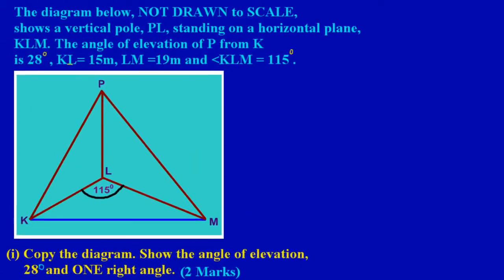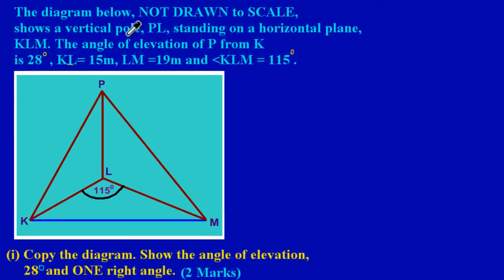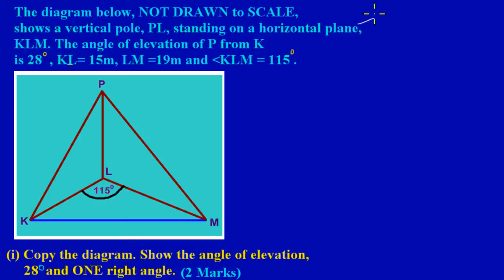Basically what they're saying here, if you notice, they gave us the vertical pole PL — this vertical pole here where I'm running my pointer along, P to L. Another piece of information they gave us is the horizontal plane KLM. Now another phrase we could use for horizontal plane is a flat surface.